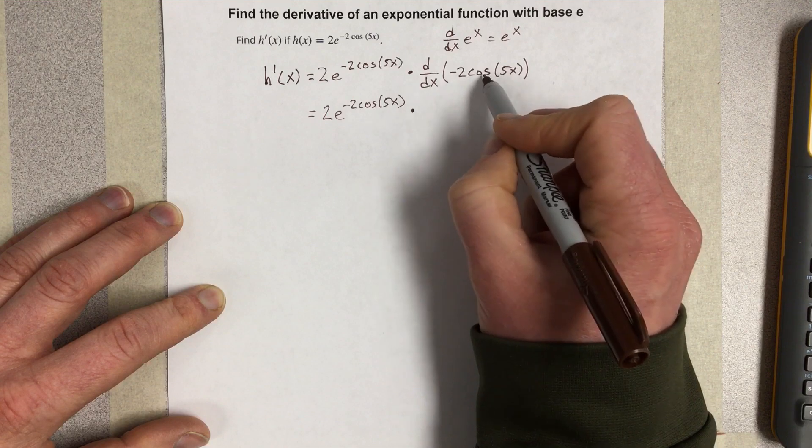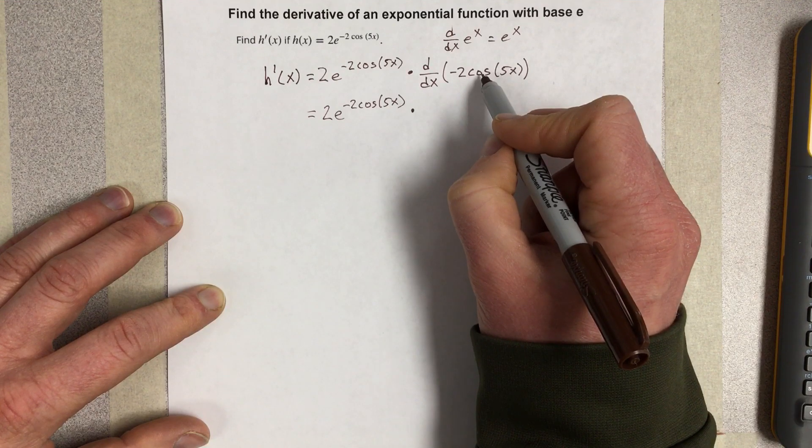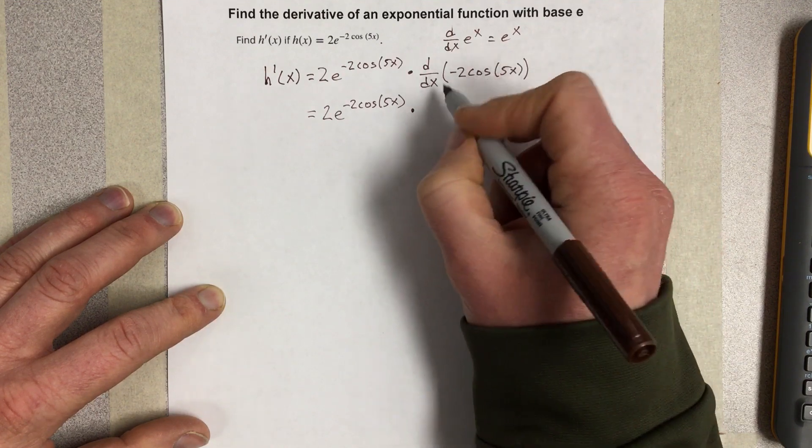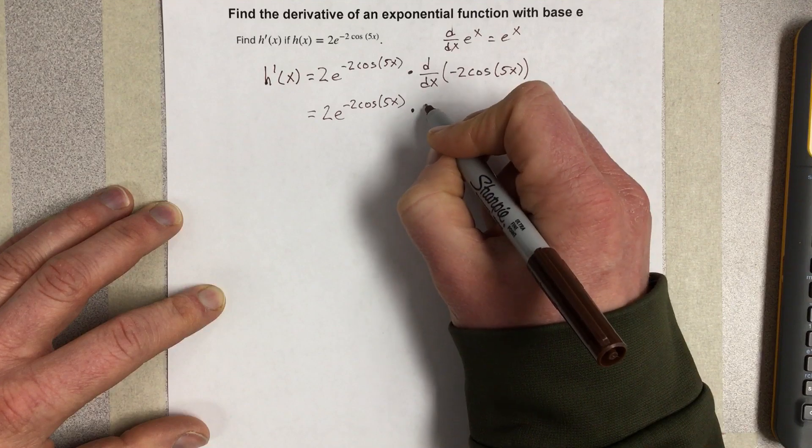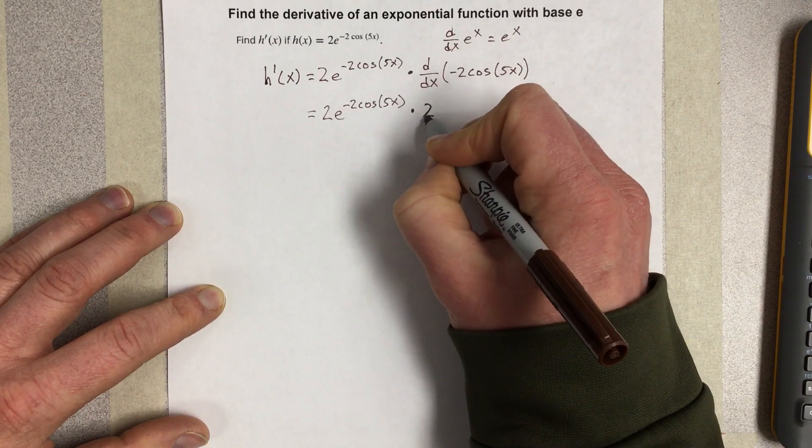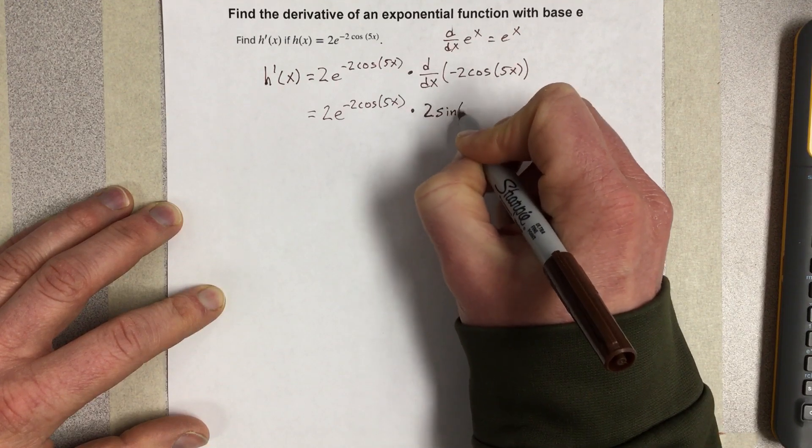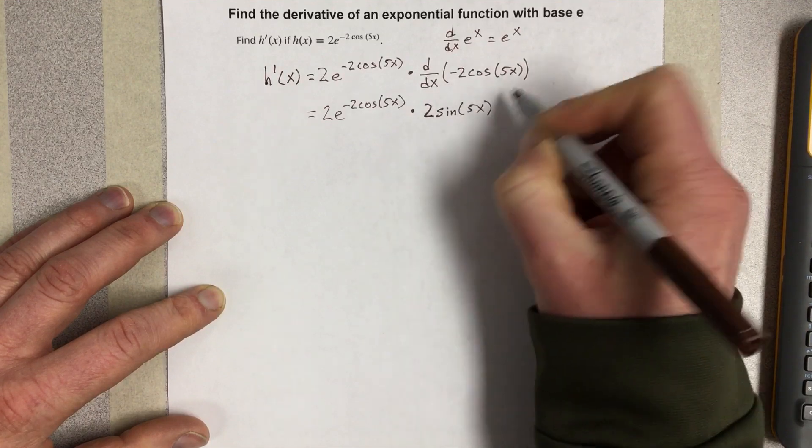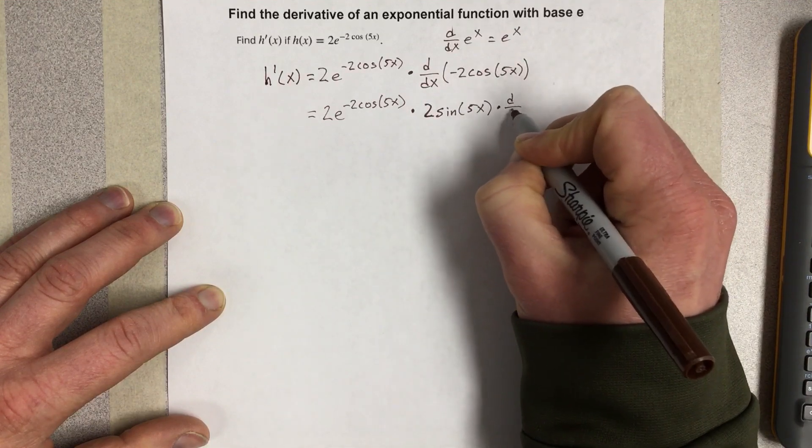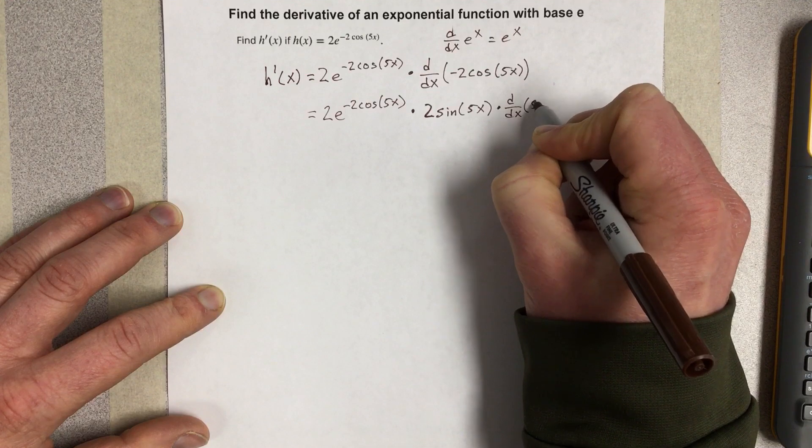So the derivative of negative cosine would actually just be sine. So we're going to say that this is 2 sine of 5x times the derivative of the inside again, which would be the derivative of 5x.